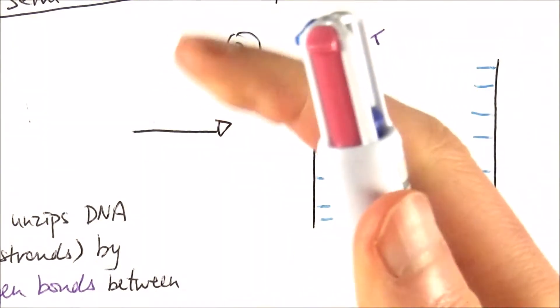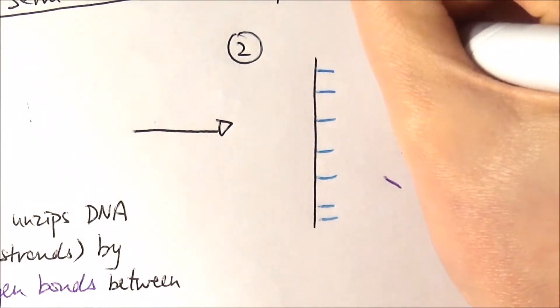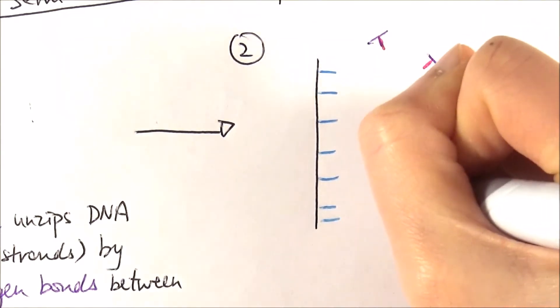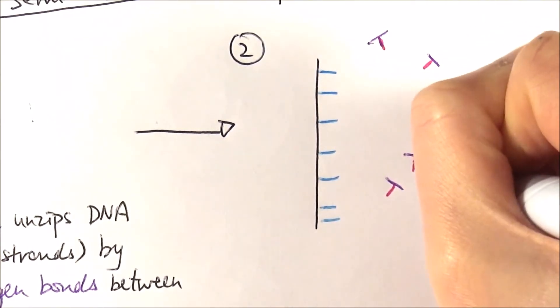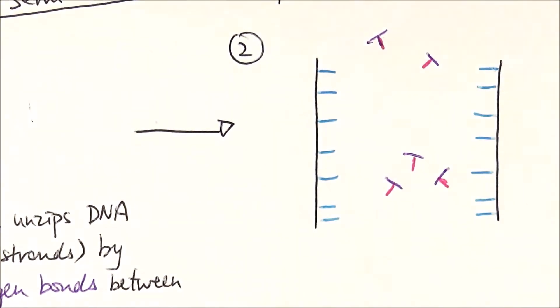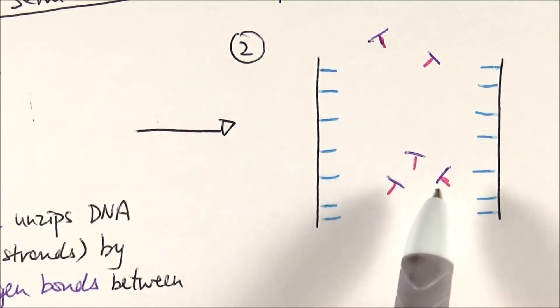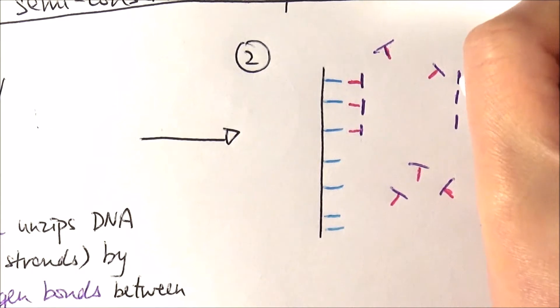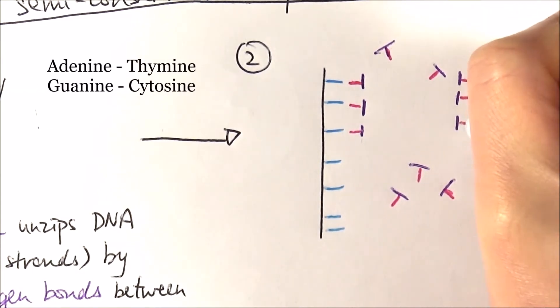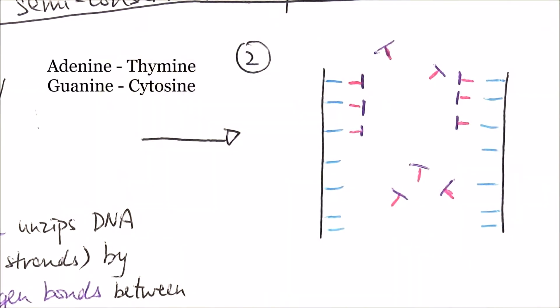Free nucleotides float around in the environment. These free DNA nucleotides are attracted to the exposed bases - adenine will base pair with thymine and vice versa, cytosine will pair up with guanine and vice versa.